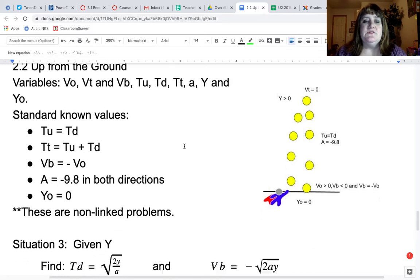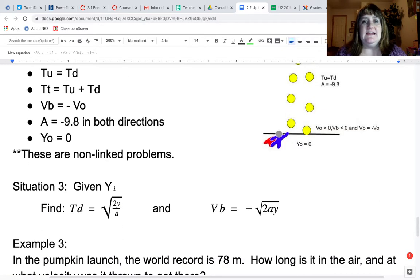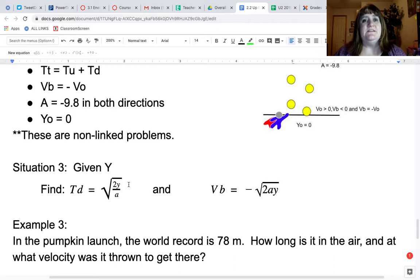So for situation three, we're given the height. It reaches a maximum height. Once you have that maximum height, remember we're looking at this from the perspective of free fall. So the time down is the square root of 2y over a, and the velocity at the bottom can be found by taking the negative square root of 2ay.